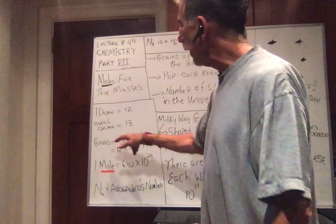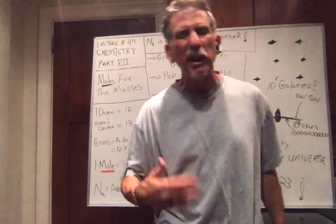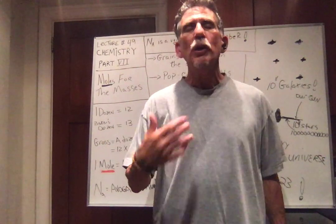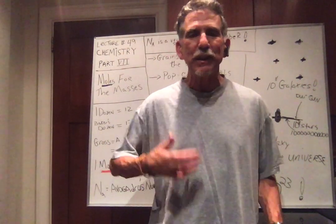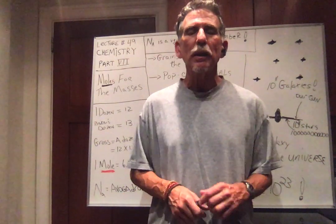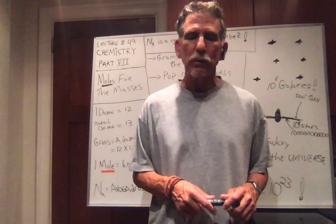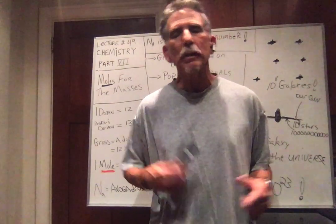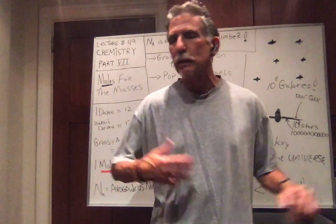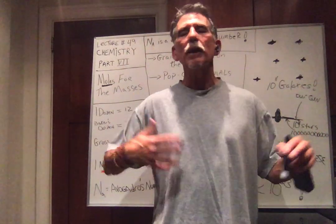What if I have a baker's dozen? Well, a baker's dozen is traditionally, if you buy a dozen bagels, the baker gives you an extra one. So a baker's dozen of anything is 13. A baker's dozen of bagels, I have 13 bagels. A baker's dozen of donuts, 13 donuts. A baker's dozen of bananas, 13 bananas. So a baker's dozen is 13.